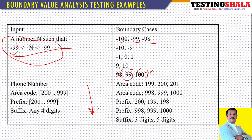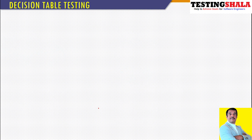Whatever data is in an extreme condition, which is in the boundary — that kind of data we will be deriving using this boundary value testing.